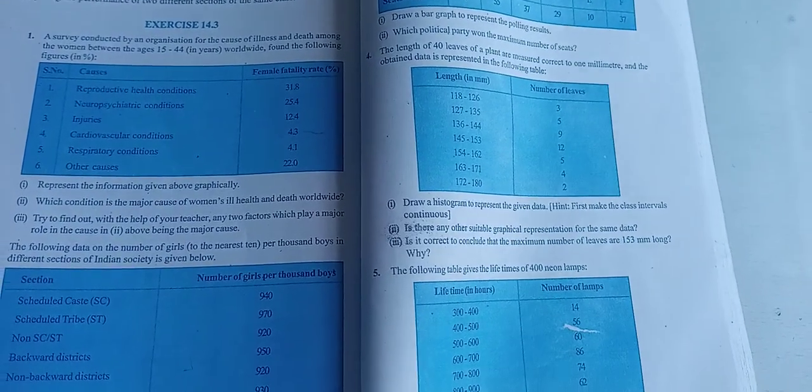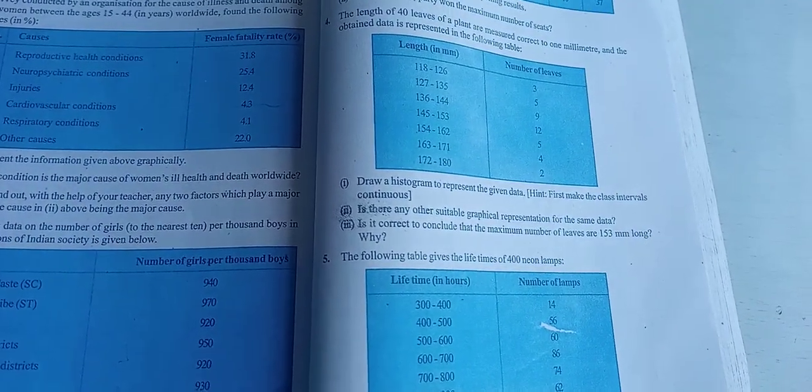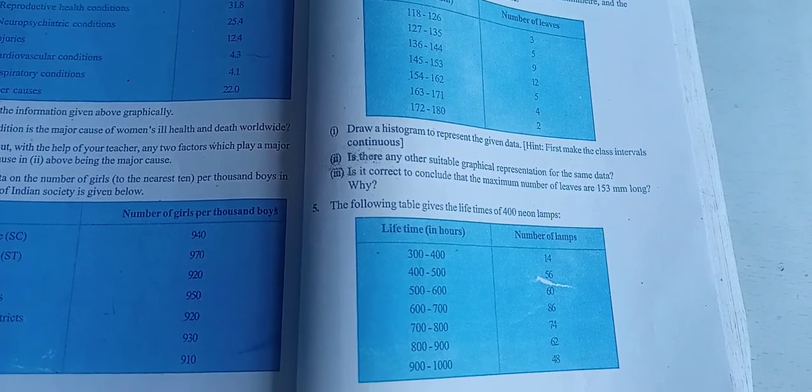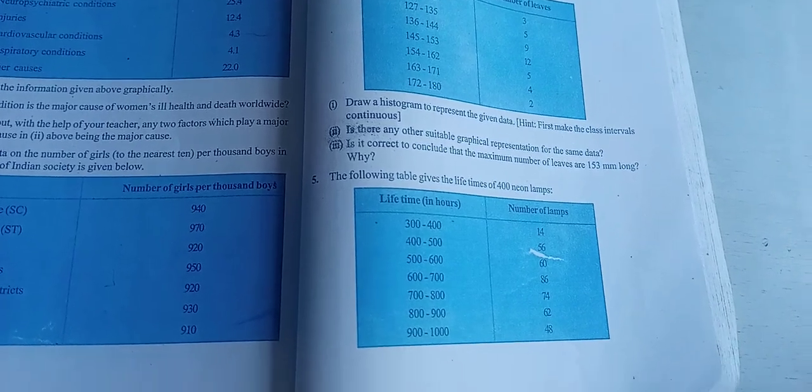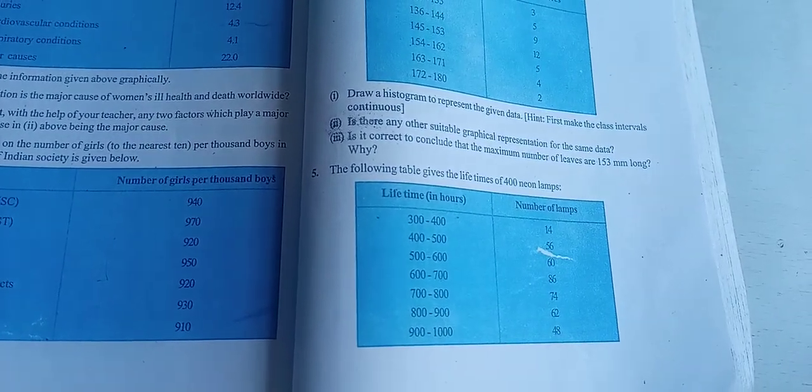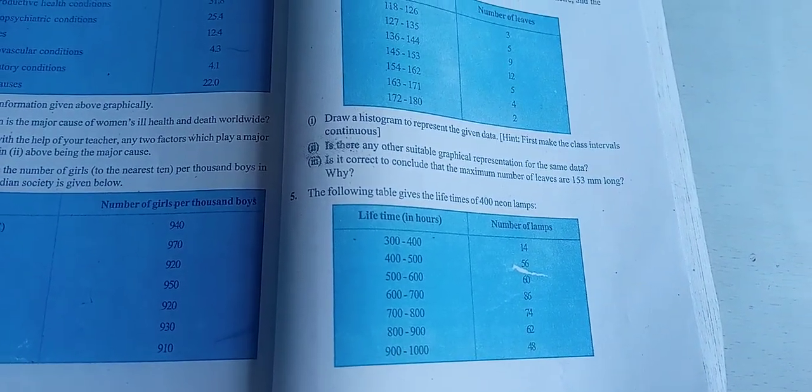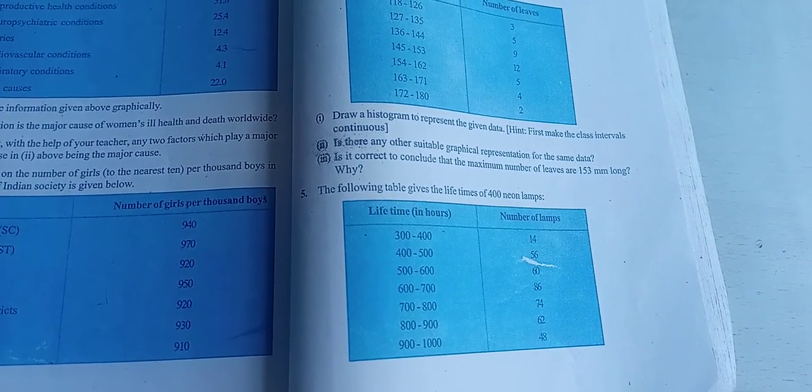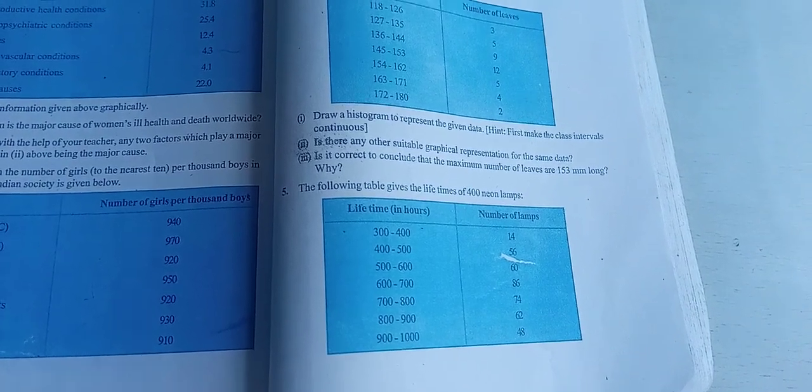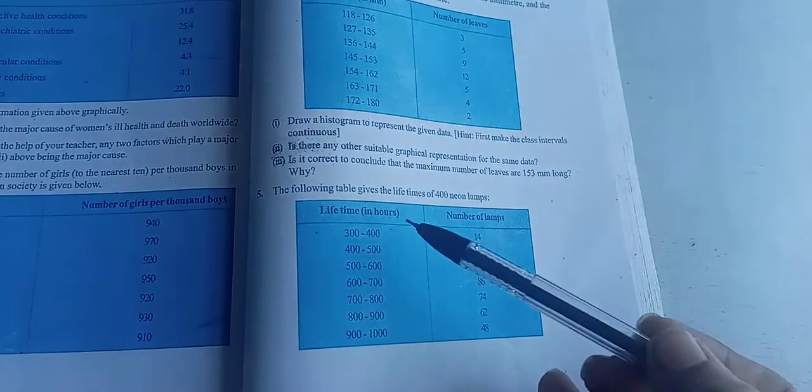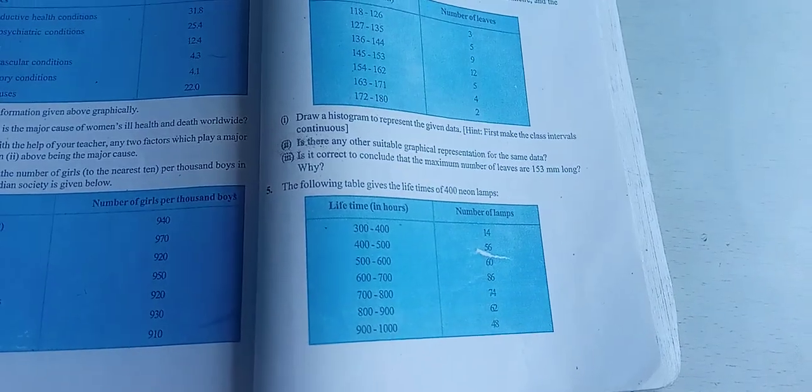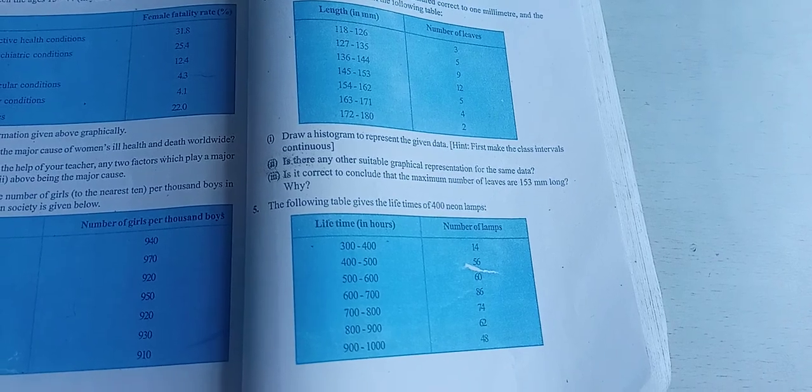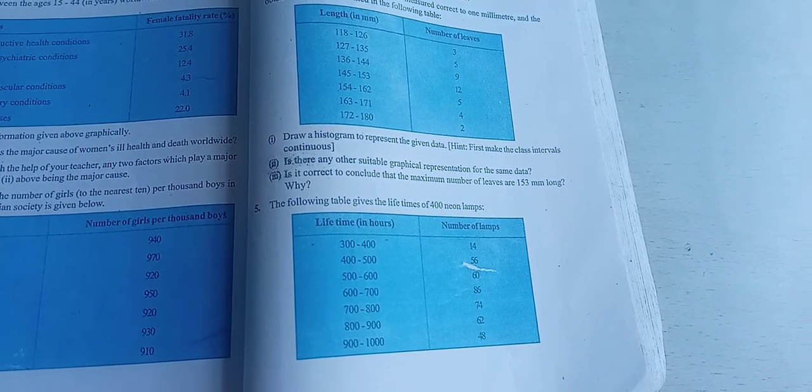So I am taking question number 5. In question number 5, it is given to you, the following table gives the lifetimes of 400 neon lamps. You have to represent this data on graph. Now if in exam it is not given to you by which method you have to draw, then the procedure will be: you have to check first of all, if the class intervals are given to you, then you have to draw histogram. So this way you can identify which graph you have to draw.